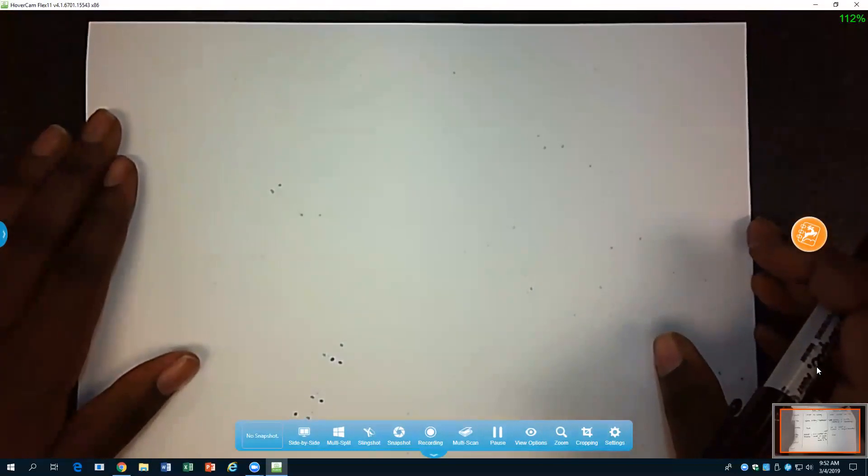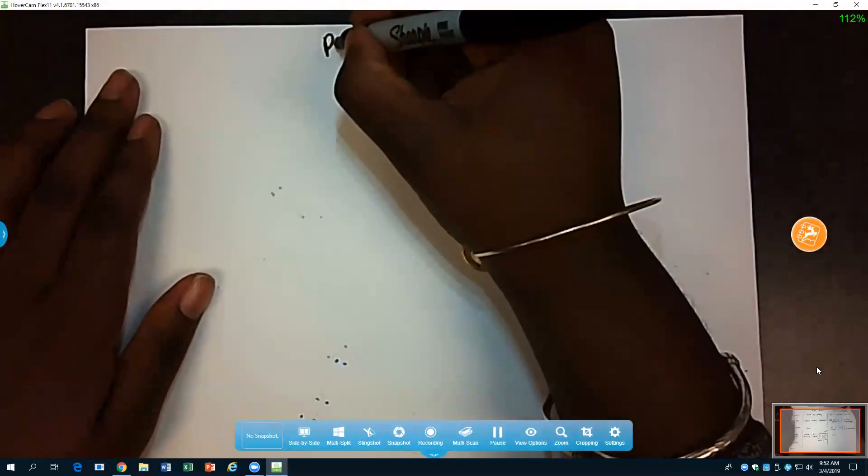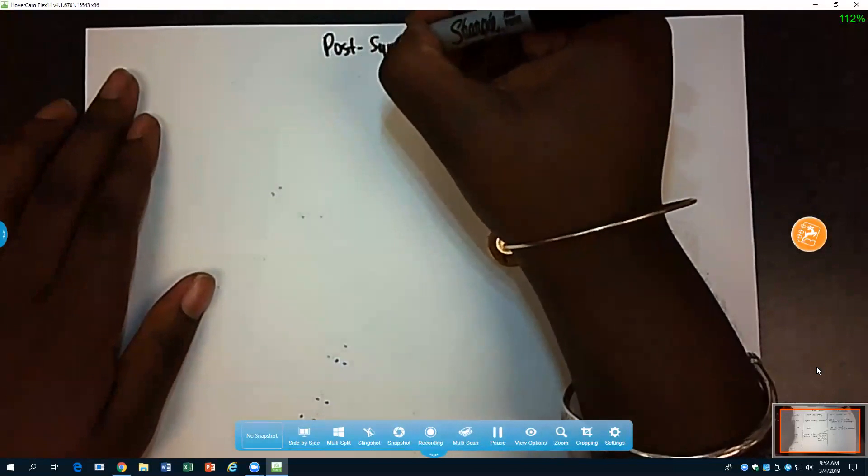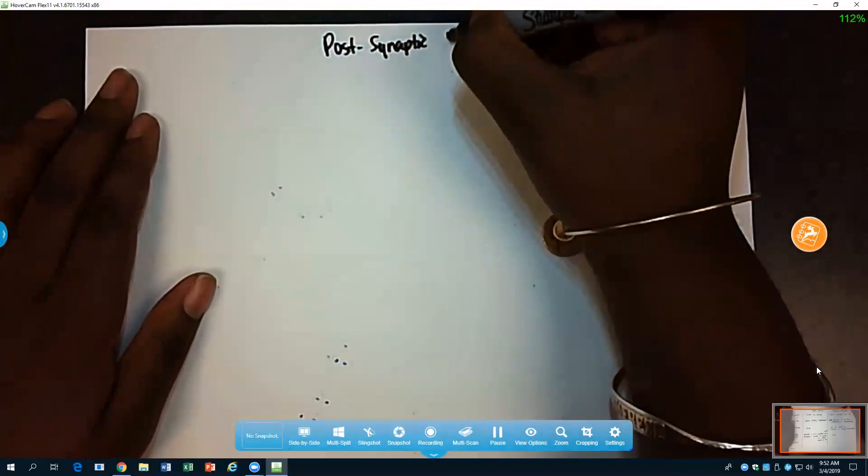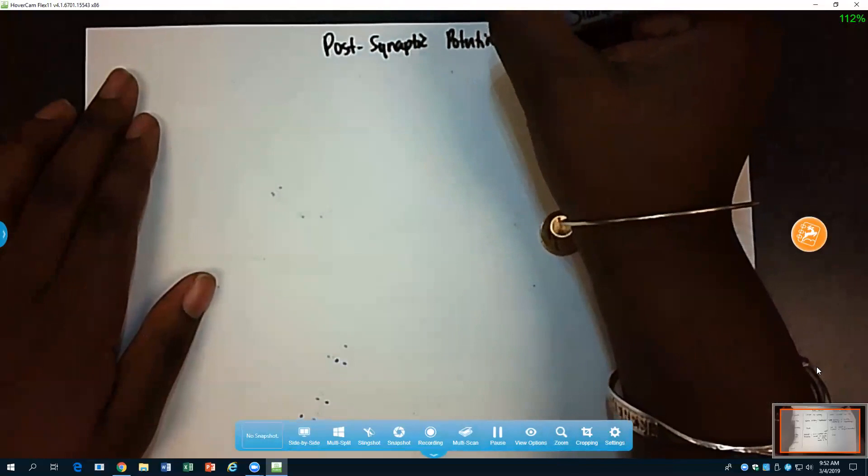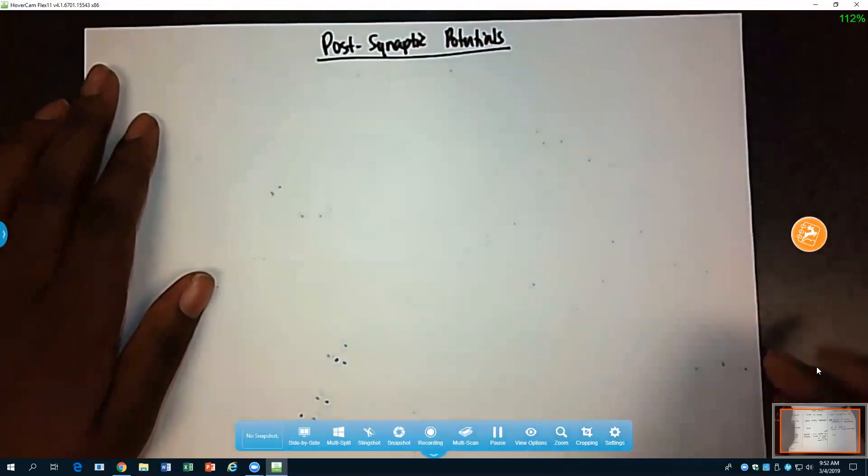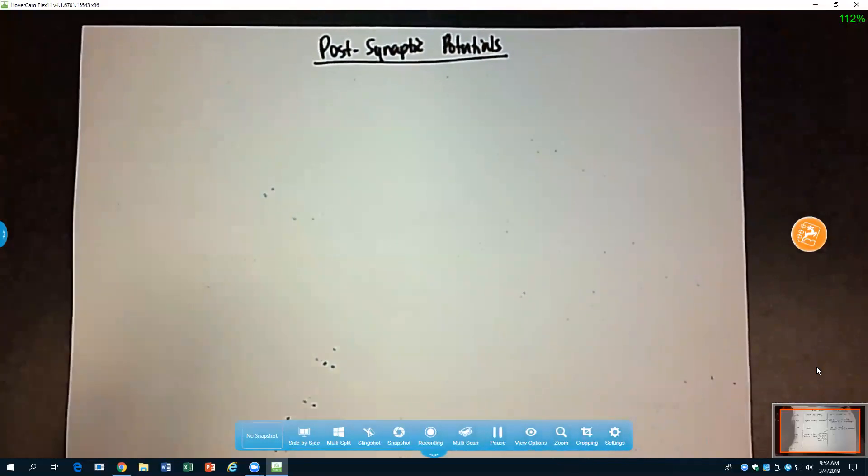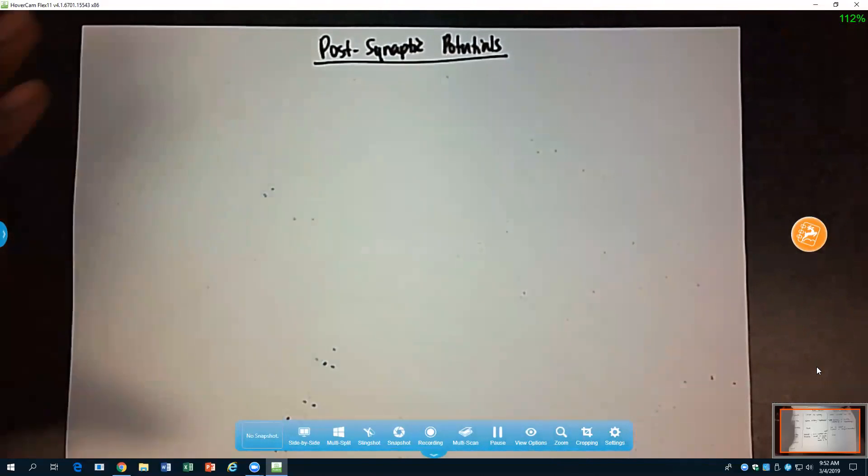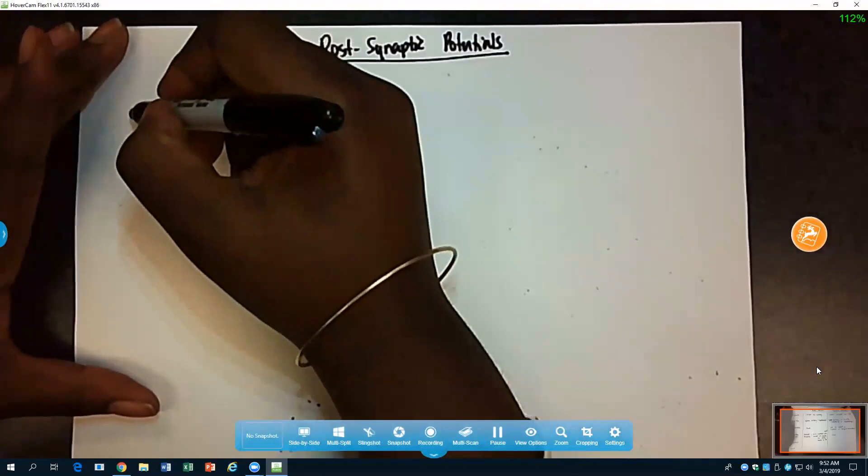So the next thing we sort of talked about were the post-synaptic potentials. It's a very brief review about what these are. So we said that we had two neurons. Let's just draw them out here.